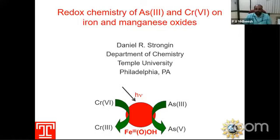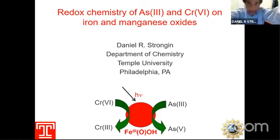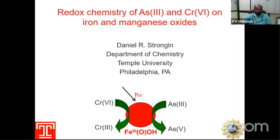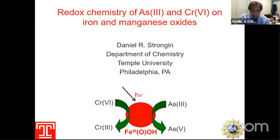Thank you for the kind introduction. I'm going to share my screen now. I want to give you an overview of some work done in our group and other groups, looking at the photochemistry of arsenite and chromate on iron oxides and manganese oxides, and also show you some interesting reactions that can happen in the dark — in the absence of light — that define the special characteristics of small band gap semiconductors such as iron oxides and manganese oxides.